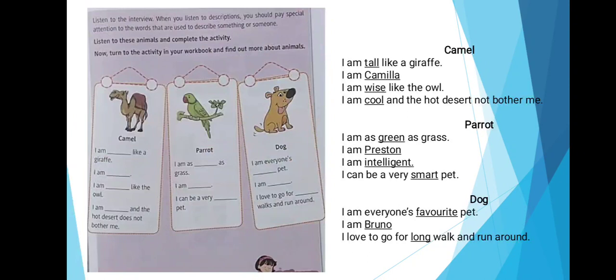Let's move to the next. This is also your textbook page. You can see a few pictures over there with a badge tag. That is a picture of a camel, parrot and dog. And there are a few sentences given with blank spaces. You are going to fill it by yourself. One I will do it for you. The first one, camel. I am tall like a giraffe. I am camilla. I am wise like the owl. I am cool and the hot desert does not bother me. So this way, you are going to do the more two, parrot and dog.